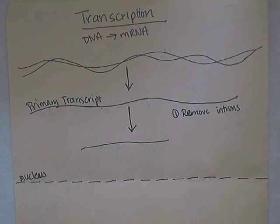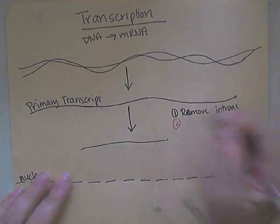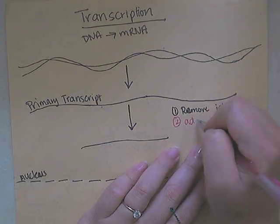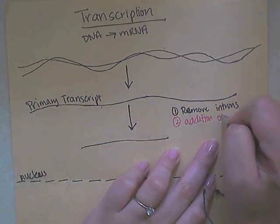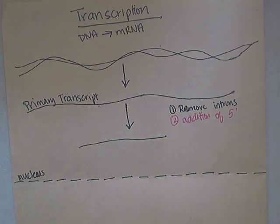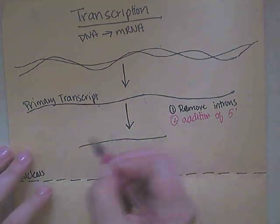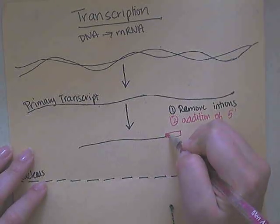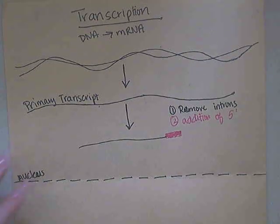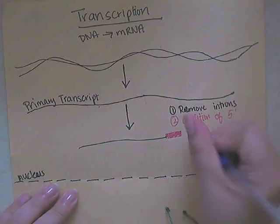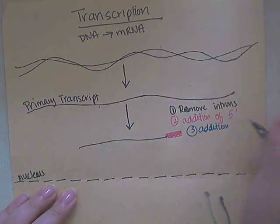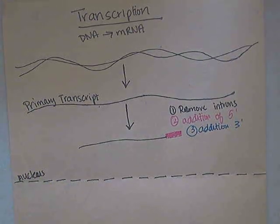The second thing that's going to happen in our processing for eukaryotic transcription is the addition of your caps. We're going to add one on the five prime end — so I'm just going to randomly assign this one right here as a five prime cap. This just helps to protect the mRNA and keep it from getting damaged.